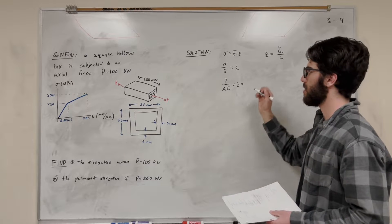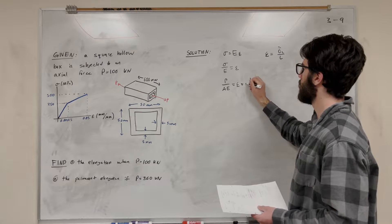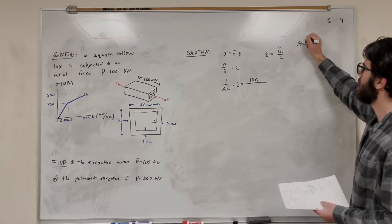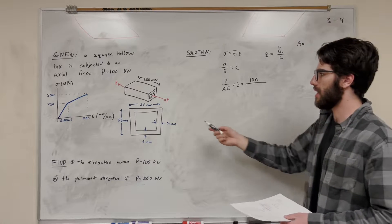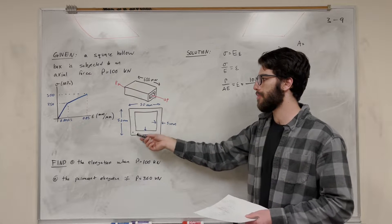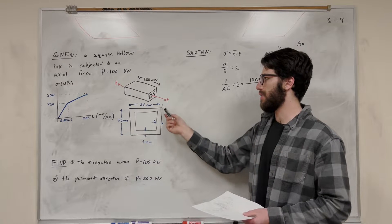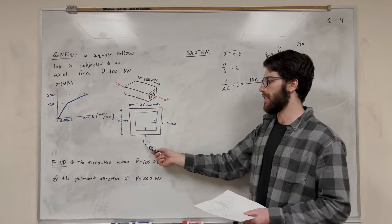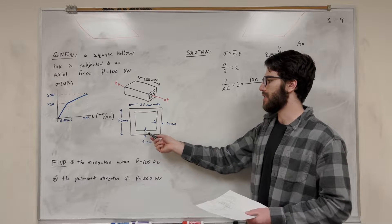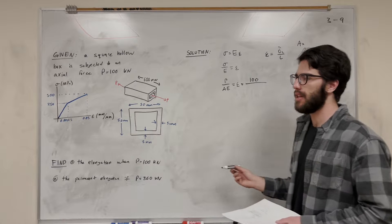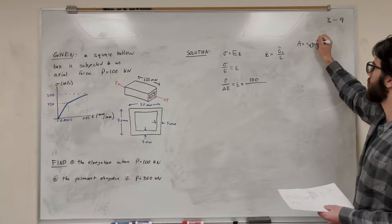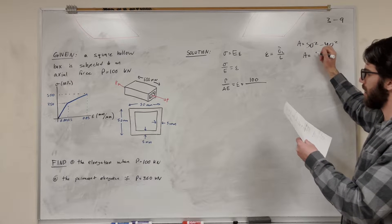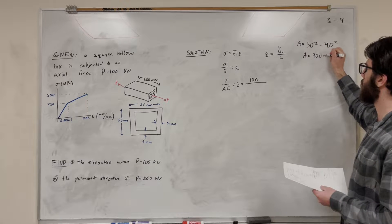Let's plug in those numbers. Force is 100 kN. Let's solve for cross-sectional area. We're going to take this square — the big square is 50 times 50, and the inner square is 40 times 40, because each side has a wall thickness of 5. So the area is 50 squared minus 40 squared, which gives us 900 millimeters squared.